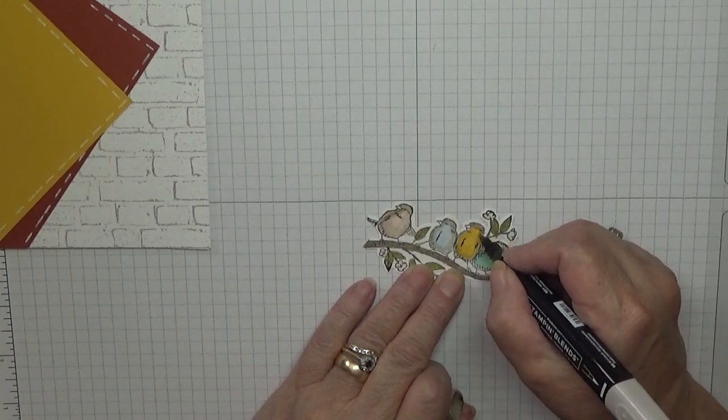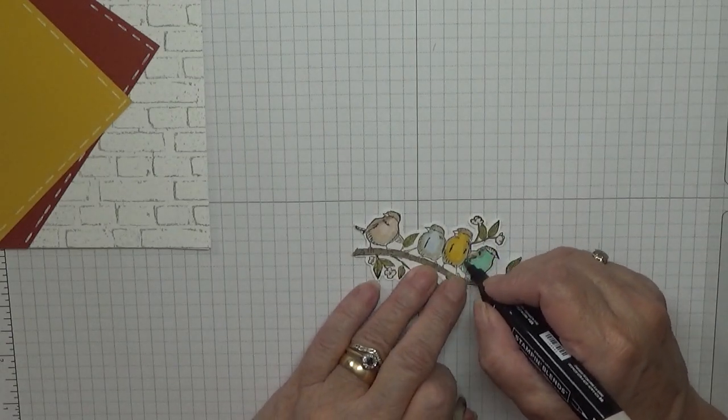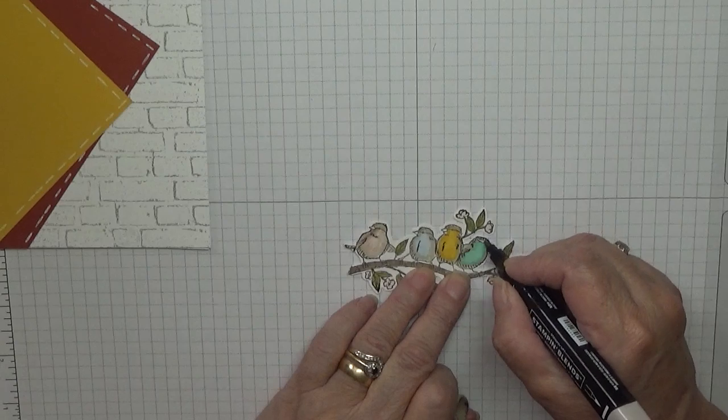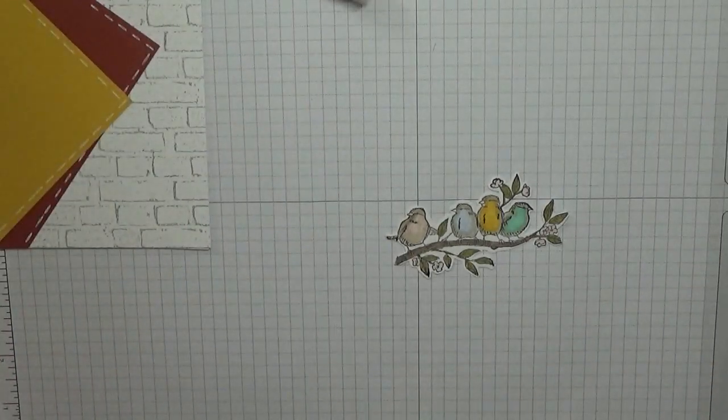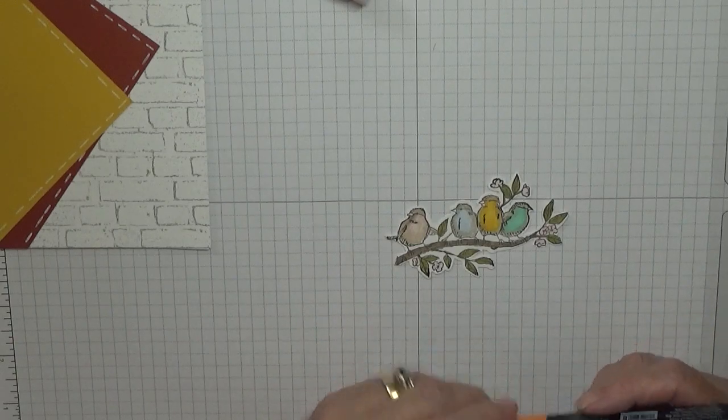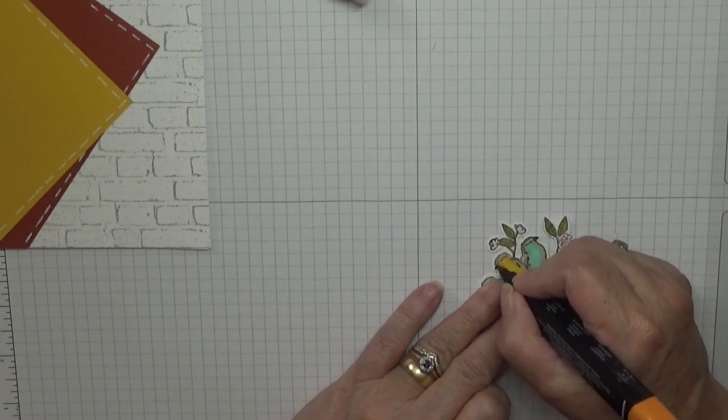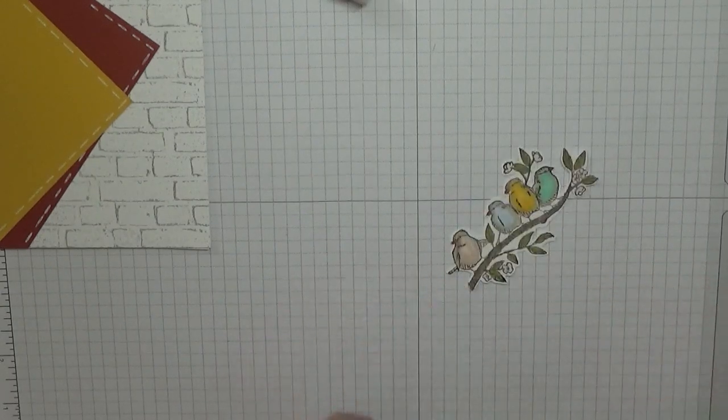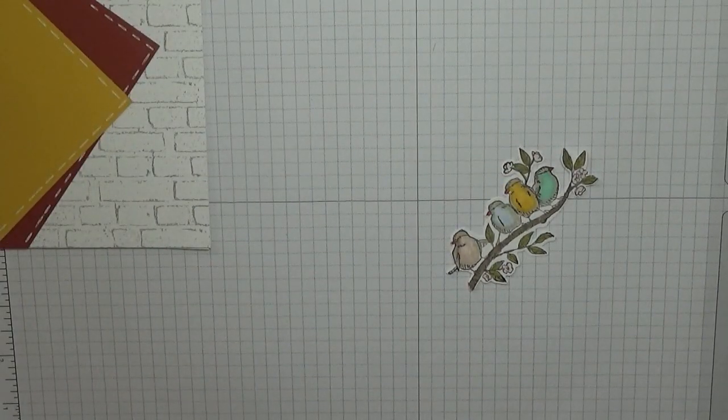And then we want an orange. I've picked pumpkin pie just to do the beaks. And that's it, that's all our coloring done.